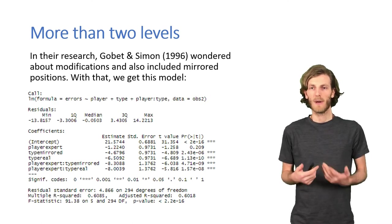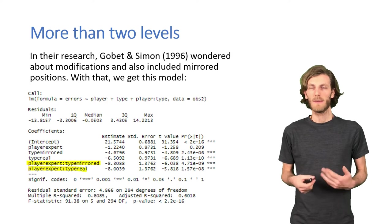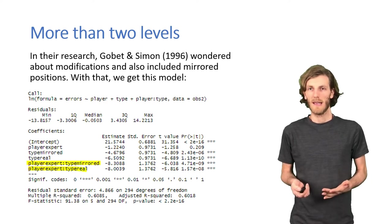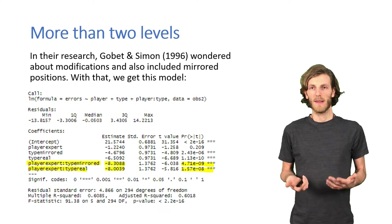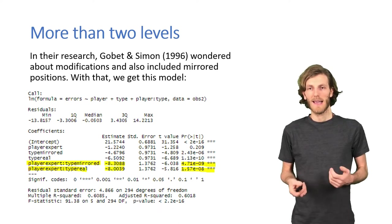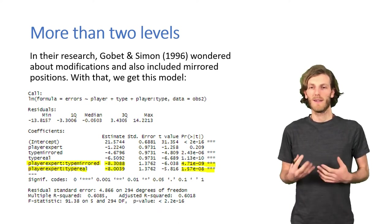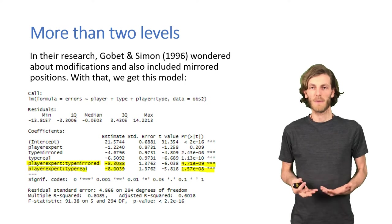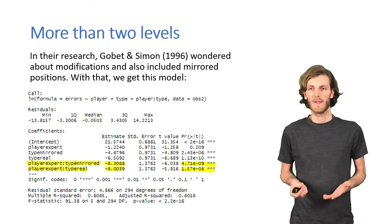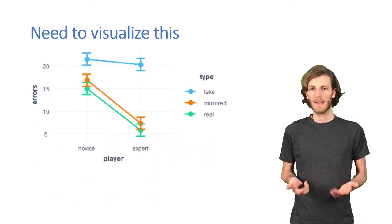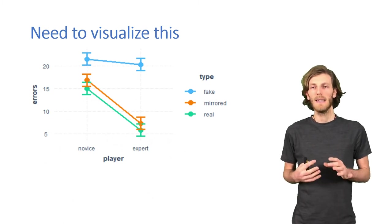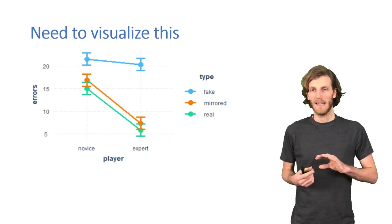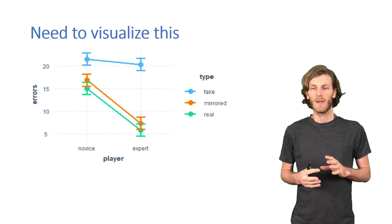If we now run a linear model on that data set, we see that we have two interaction terms that are now both significant. Whenever we have more than one interaction term, plotting becomes really quite essential. So, we can run exactly the same plot again. And here we can now see that clearly there is still an interaction going on, but two of the lines are now clearly parallel.